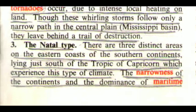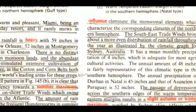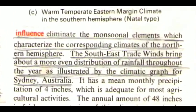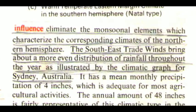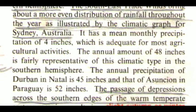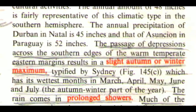There are three distinct areas on the eastern coasts of the southern continents lying just south of the Tropic of Capricorn which experience this type of climate. The narrowness of the continents and the dominance of maritime influence eliminate the monsoonal elements which characterize the corresponding climates of the northern hemisphere. The southeast trade winds bring about a more even distribution of rainfall throughout the year, as illustrated by the climatic graph for Sydney, Australia. It has a mean monthly precipitation of 4 inches. The annual amount of 48 inches is fairly representative. The annual precipitation of Durban in Natal is 45 inches and that of Asuncion in Paraguay is 52 inches.